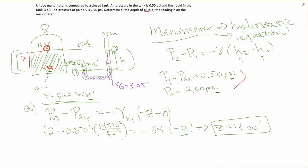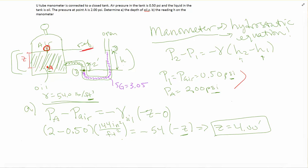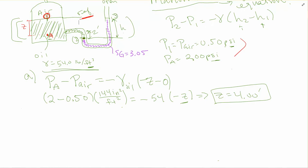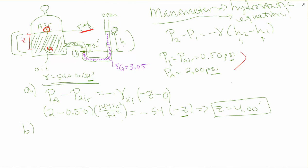Now that we have that, let's move on to part B where we want to find H. We're still going to use the same reference line. For part B, we're going to have to apply the hydrostatic equation two times: first between point A and point 2, where we switch over from oil to the other fluid in the manometer, and then between point 2 and point 3.